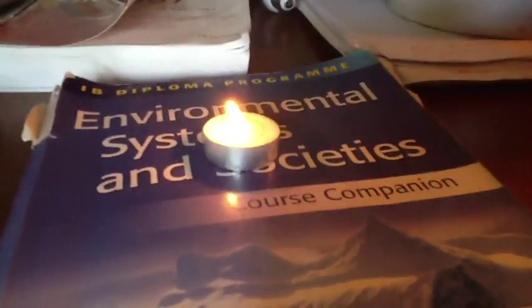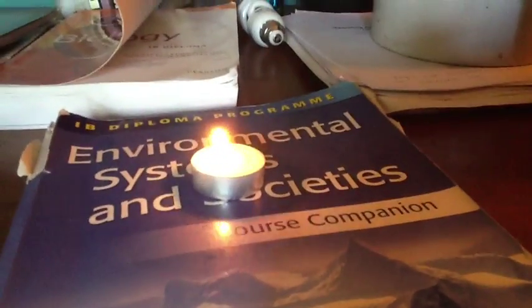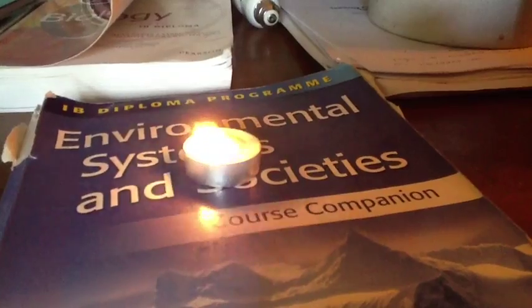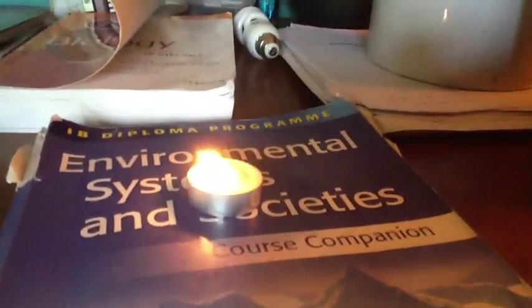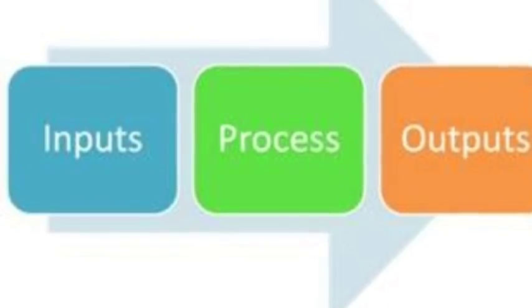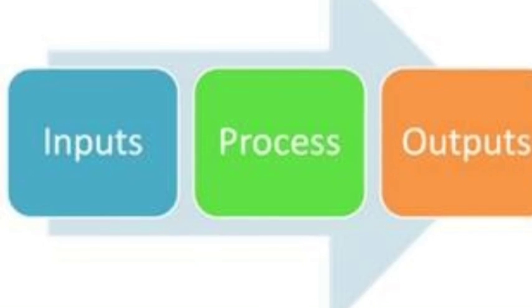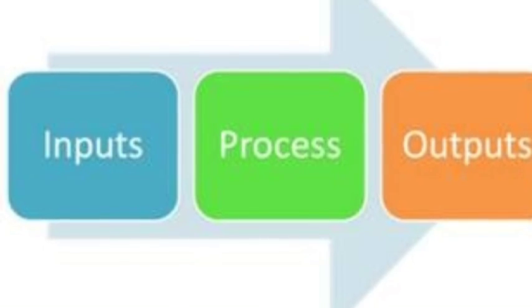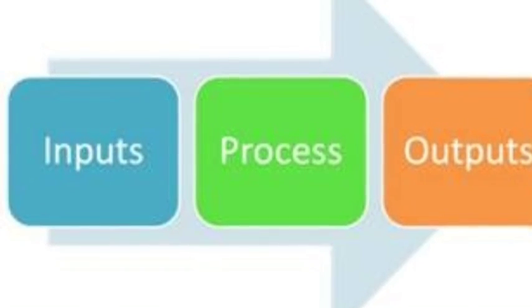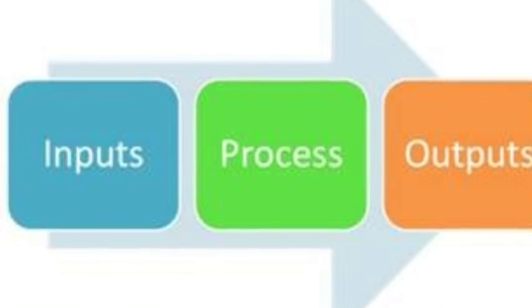Once we light the candle, the process of combustion occurs, assuming we provide all the needed inputs — which we have. As the candle burns, products of combustion or outputs are released. They include light, heat, gases such as carbon monoxide, and smoke which has particulate matter.